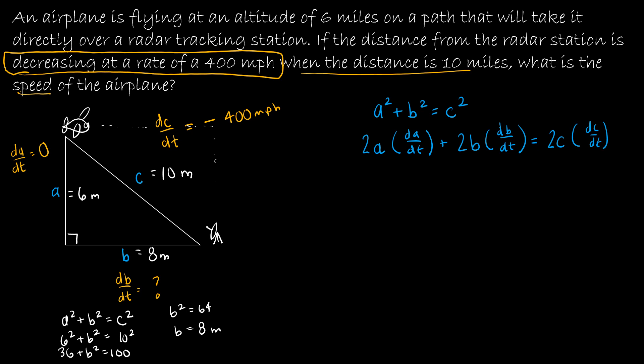The derivative of A² is 2A·DA/DT, the derivative of B² is 2B·DB/DT, and the derivative of C² is 2C·DC/DT. For the sake of ease, I'm going to divide everything by two. Now I'll plug in what I know: A is 6, DA/DT is 0, B is 8, C is 10, DC/DT is -400. So 8·DB/DT = -4000, which gives DB/DT = -500.